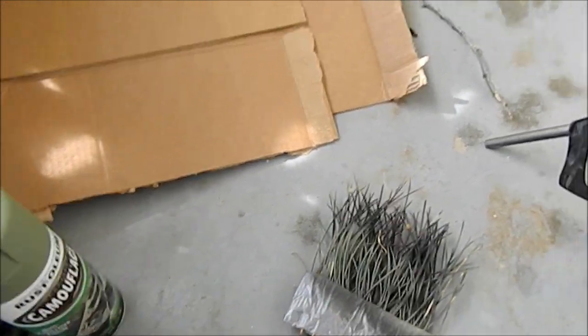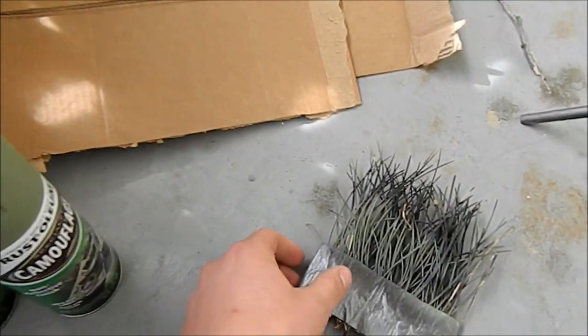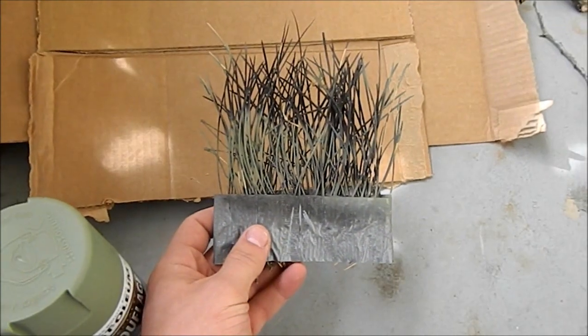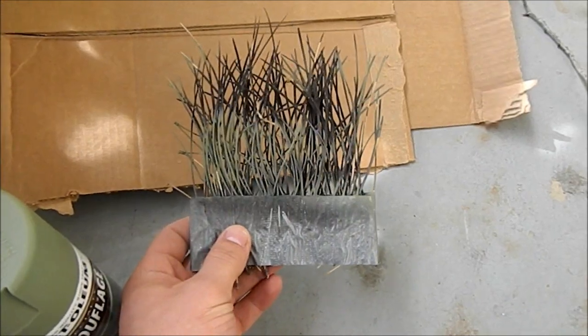The first thing you're going to want to do after you're picking your two colors is make a stencil with material that's found around you, or whatever you want the pattern to look like.